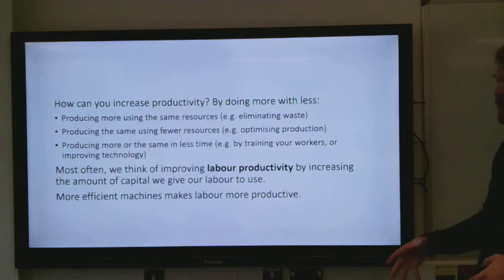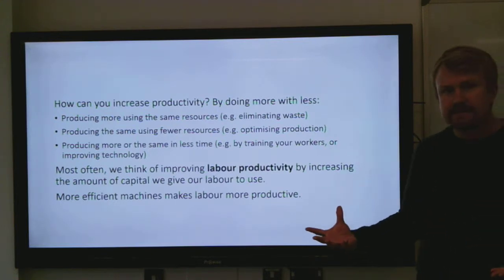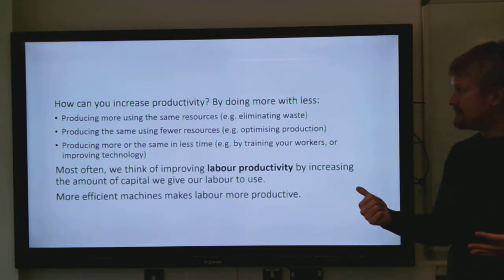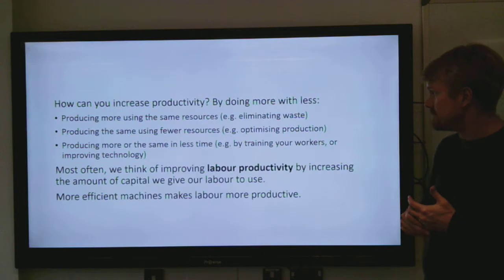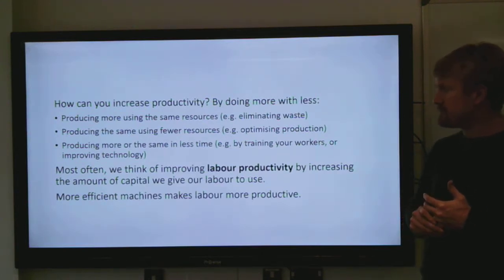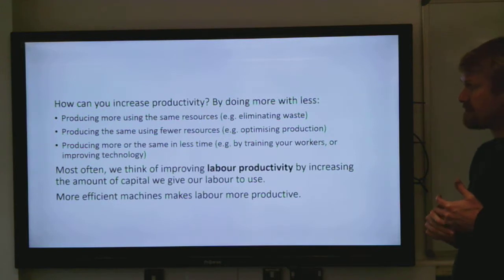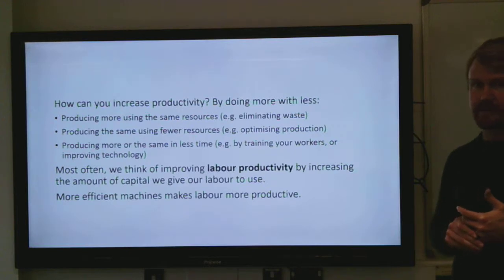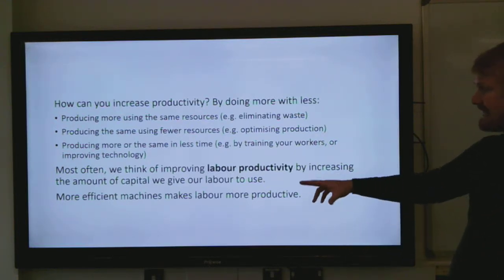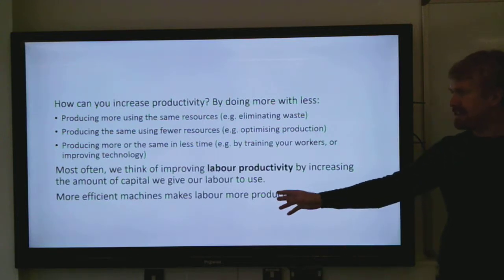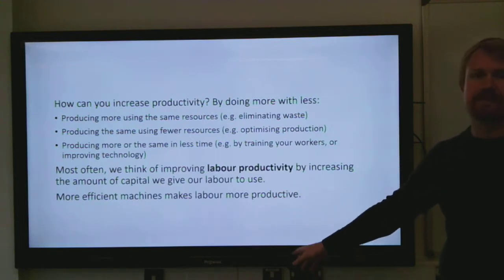How can you increase productivity? It's essentially by doing more with less. You can produce more using the same resources by eliminating waste. You can produce the same amount but using fewer resources — this would be called optimizing production. Or you can produce more in less time, for example by training your workers or improving your technology. Most of the time you want to think about improving labor productivity by increasing the amount of capital that we give the labor to use, so more efficient machines makes labor more productive.